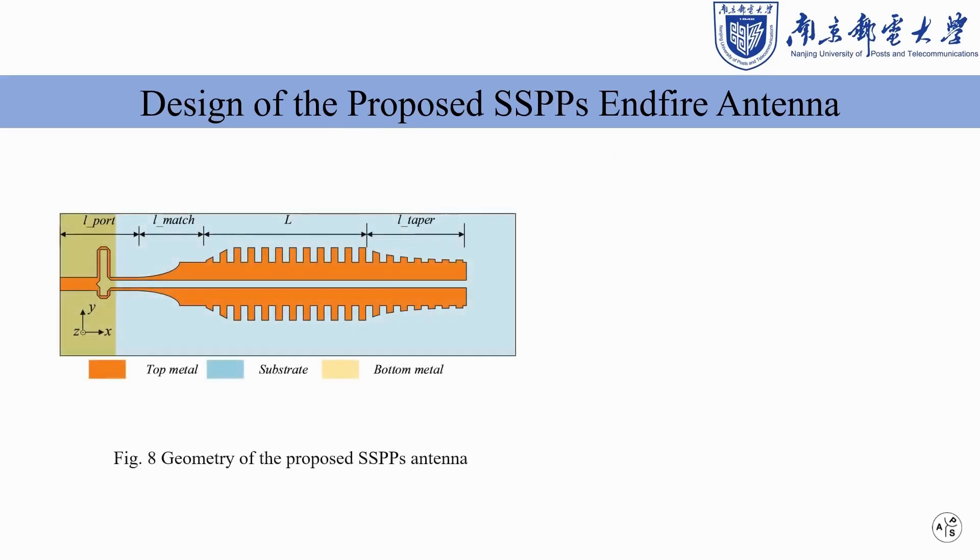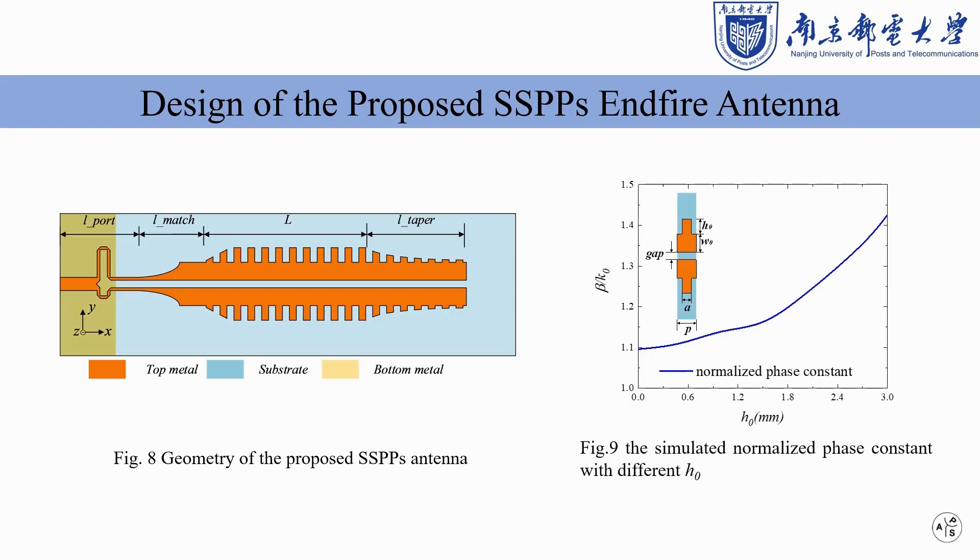To make sure that all of the energy can radiate into the free space, a larger length is needed otherwise it will cause reflection and worse bandwidth. In order to solve this problem, a gradually disappearing corrugated structure is further introduced to the end of the antenna.